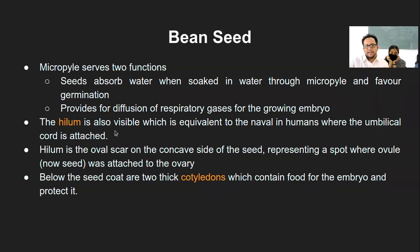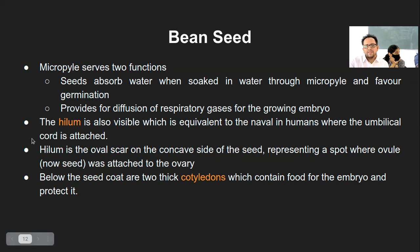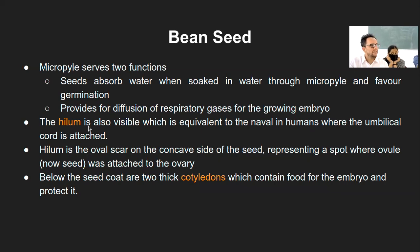Next we have the hilum. Hilum was the connection joint between the ovule and what we call the funiculus, or the stem of the ovule. This hilum is equivalent to the navel in humans where the umbilical cord is attached.